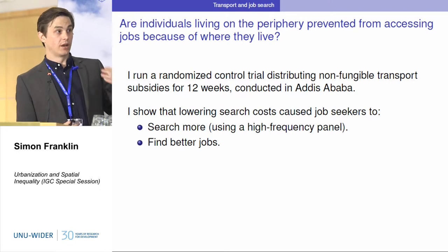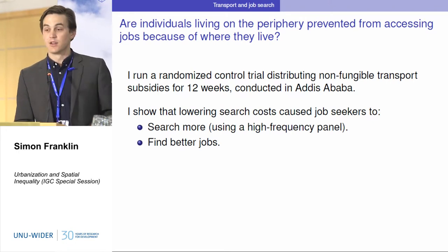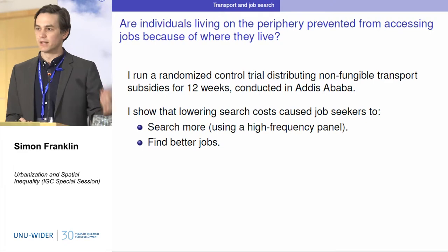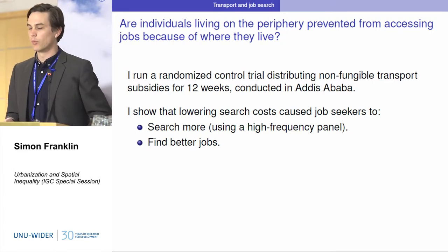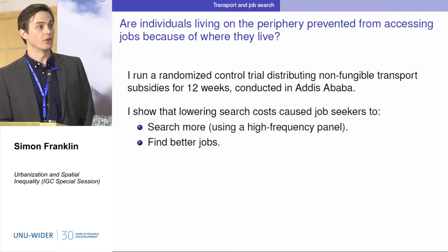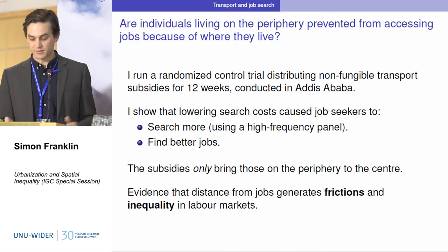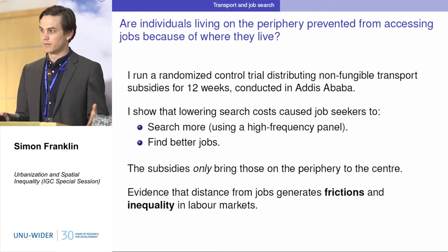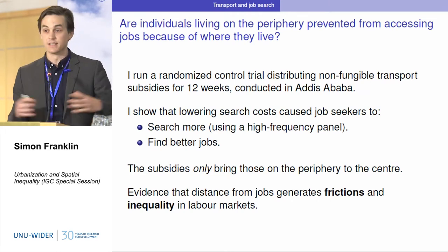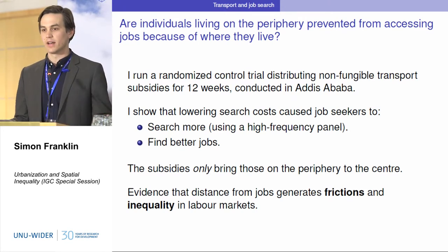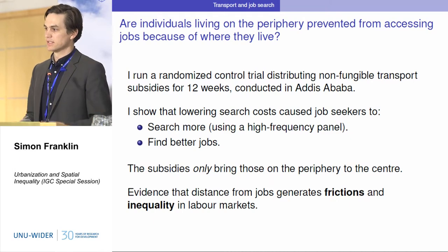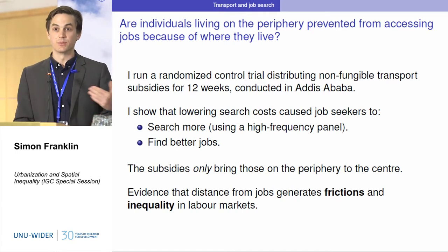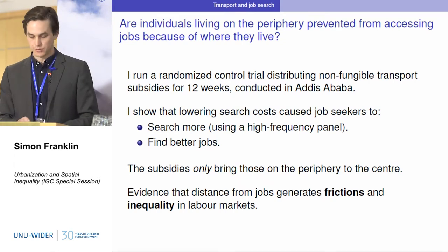When we gave people these transport subsidies and lowered search costs, they searched more frequently for jobs. That tells us something about how they were constrained. They ended up with better employment opportunities at the end of the study — they had significantly more permanent jobs. Because the subsidies only brought people from the periphery to the center, to where other people were already living, we can take this as causal evidence that distance in cities is generating frictions and leading to inequality of access to opportunity. People living on the outskirts have unequal access to employment and are being locked out of labor markets.